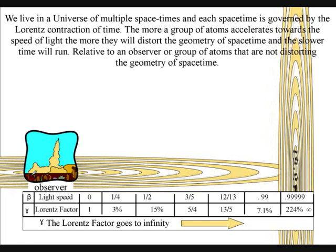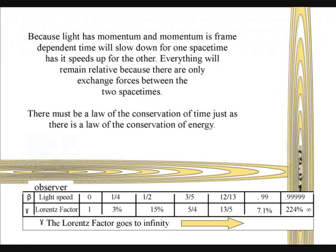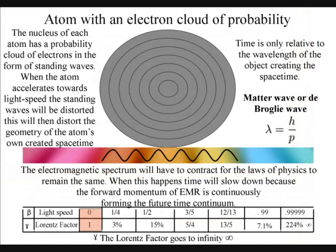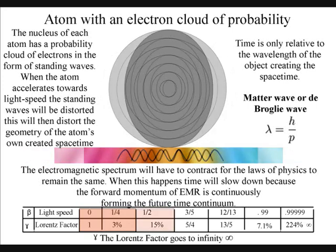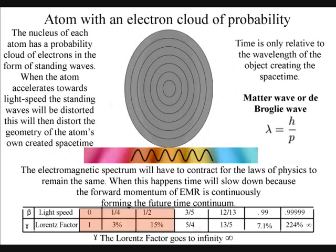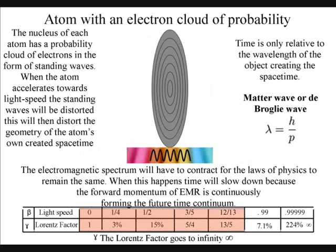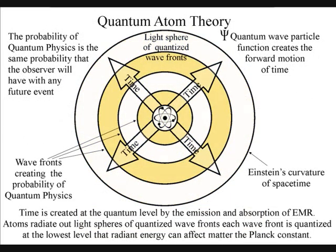The accelerating object will distort the geometry of its own space-time, from the smallest atom to the entire electromagnetic spectrum, will have to contract for the laws of physics to remain the same. When this happens, time will slow down, because the forward momentum of electromagnetic radiation is continuously forming the future probability of the time continuum.